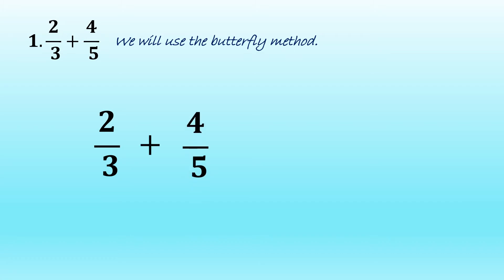To find the sum of two-thirds and four-fifths, we will use the butterfly method. To draw the wings of the butterfly, we will multiply two and five, and its product is ten. And we also multiply three and four, so its product is twelve.